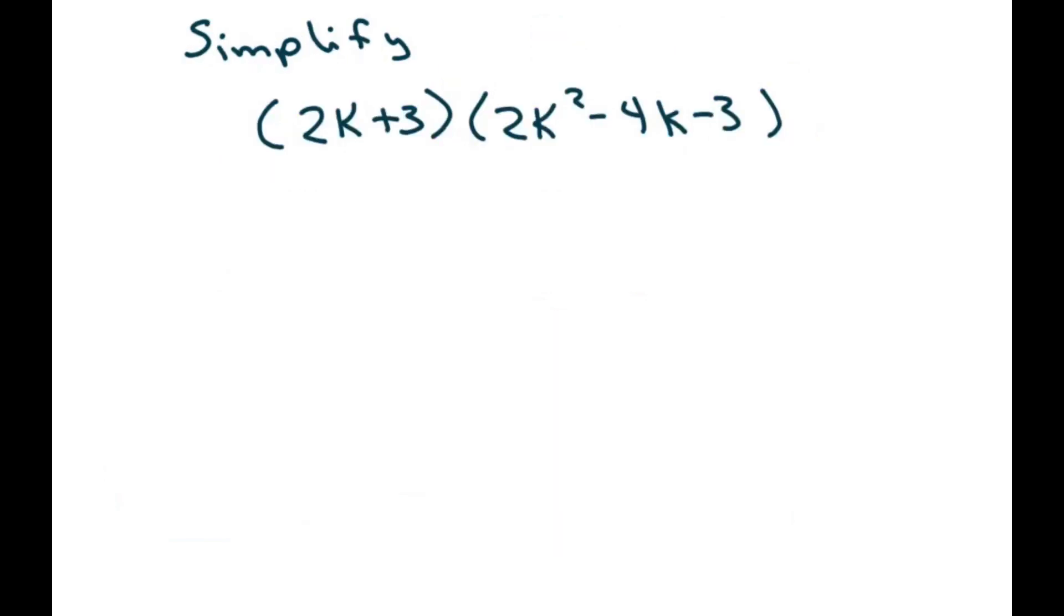And the last one is kind of what we just got through doing. That's why I included it in the video. So just multiply each of these three terms. So you're going to get 4k cubed minus 8k squared minus 6k. So we have a total of 6 terms, 2 times 3. Now do this part.